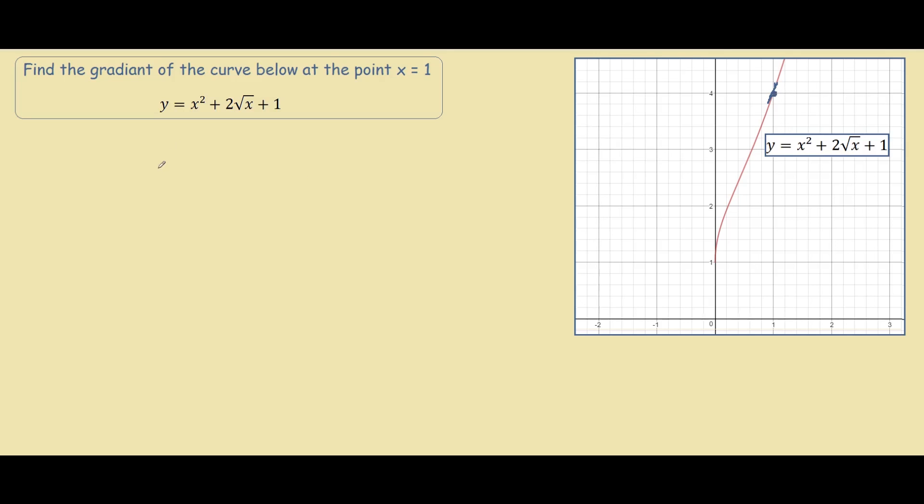To achieve this we find dy/dx. The derivative of x² is simply 2x plus 2 times the derivative of √x. We know √x is the same thing as x^(1/2).